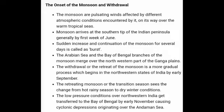The monsoon is pulsating and is affected by different atmospheric conditions encountered over the warm tropical seas. The monsoon arrives at the southern tip of the Indian peninsula generally by the first week of June. A sudden increase and continuation of the monsoon for several days is called a burst. The Arabian Sea and Bay of Bengal branches of the monsoon merge over the northwestern part of the Ganga Plains. The withdrawal of the monsoon is a gradual process beginning in the northwestern states by early September. By early November, low pressure conditions shift to the Bay of Bengal, causing cyclonic depressions originating over the Andaman Sea.